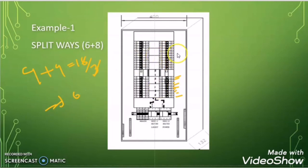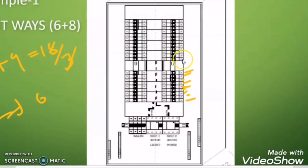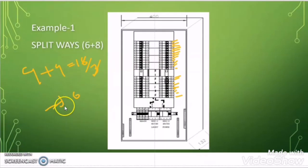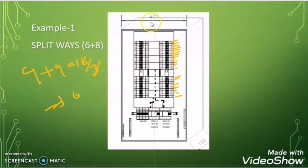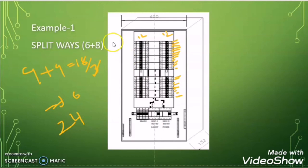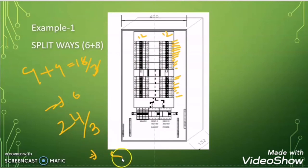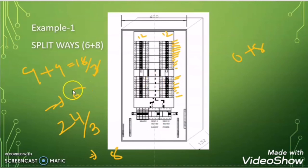Now counting the breakers in section 2 gives 12 plus 12, totaling 24 breakers. Dividing by 3 gives 8. So this final distribution board is a split way type of 6+8, because section 1 is 6 way and section 2 is 8 way.